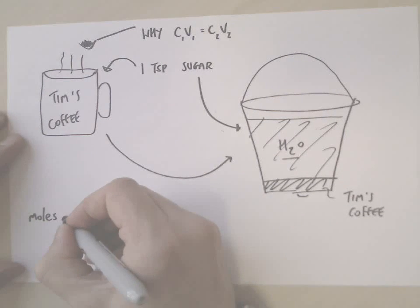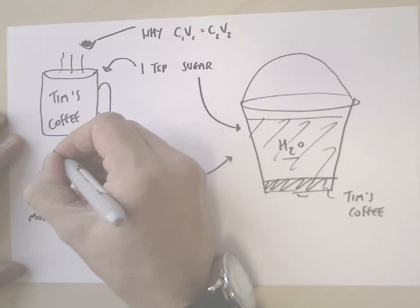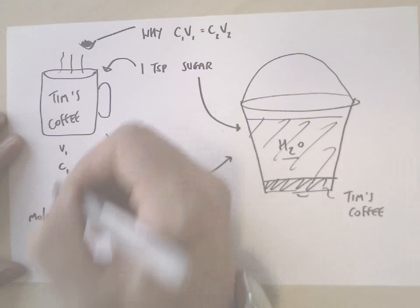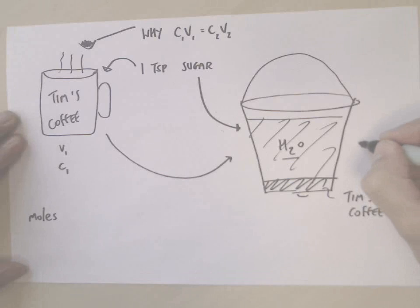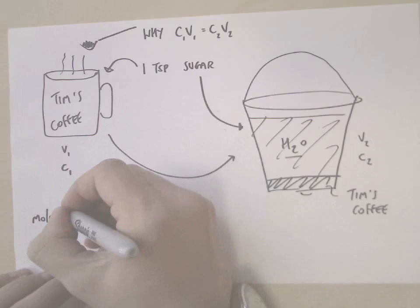And we say that the moles of sugar at the beginning, so let's call this volume one and concentration one, and we'll call this volume two and concentration two, the number of moles at the beginning.